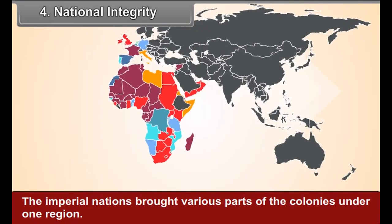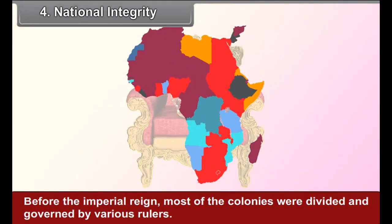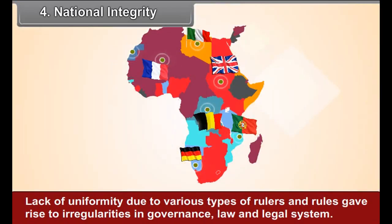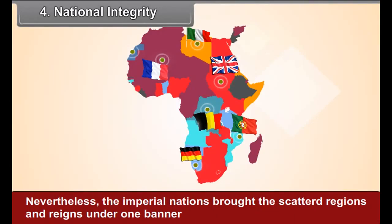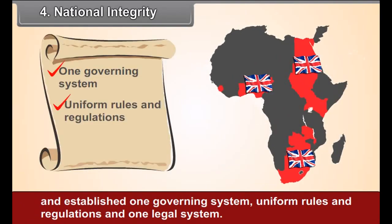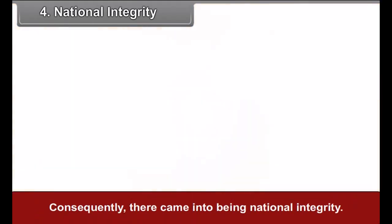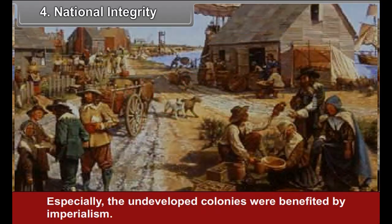Fourth, national integrity. The imperial nations brought various parts of the colonies under one region. This centralized governing system integrated the colonies. Before the imperial reign, most of the colonies were divided and governed by various rulers. Lack of uniformity gave rise to irregularities in governance, law and legal system. Nevertheless, the imperial nations brought the scattered regions under one banner and established one governing system, uniform rules and regulations, and one legal system. Consequently, national integrity came into being, and especially the undeveloped colonies were benefited by imperialism.